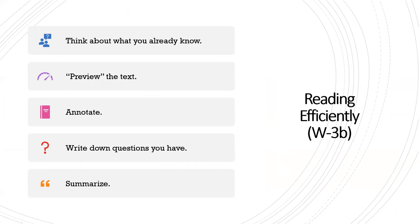You've probably found, if you've been in college for more than one semester, that you are assigned a good deal of reading, and there may be times where it seems difficult to keep up. In the Little Seagull, section W3B, there are some steps you can take to read more efficiently. The first thing you want to do when given something new to read is think about what you already know about the topic. We did this today in class with the free write — I asked you some general questions around the concept of learning loss and the pandemic.